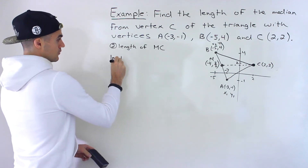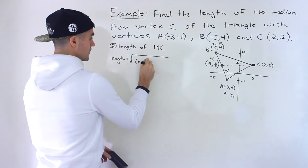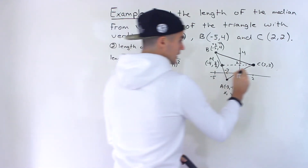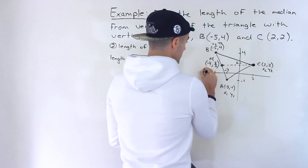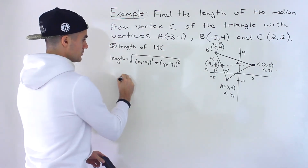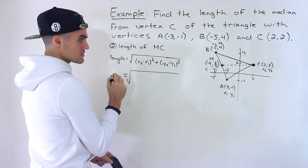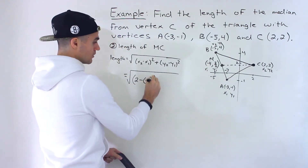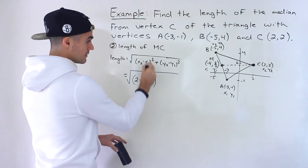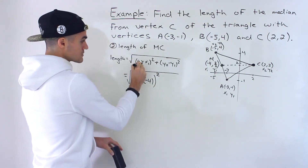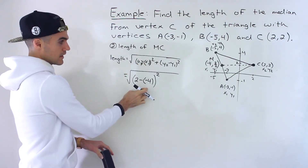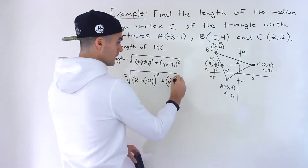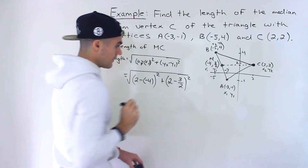What's the formula for the length? I'll let C be (x2, y2) and M be (x1, y1). So let's plug everything in — be careful with the algebra here. We'll have x2 which is 2, minus x1 which is negative 4, so that's in brackets and then squared. And then y2 which is 2, minus y1 which is 3 over 2, and that's squared.